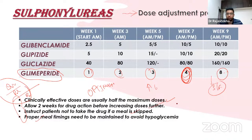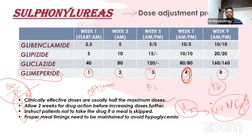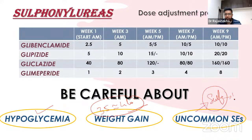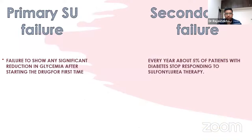Hypoglycemia is a very frightening experience and must be taken seriously. Weight gain from sulfonylureas averages 3.5–4 kg and stabilizes after 3–6 months. Uncommon side effects include anaphylaxis, as these are sulfa-based drugs.